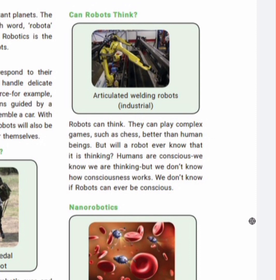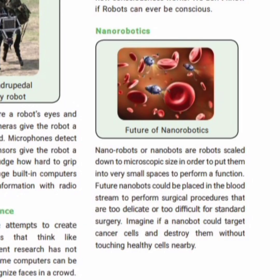What is artificial intelligence? Sometimes a robot has to think — for example, to play a complex game like chess. Humans are conscious and know they are thinking. Robots use AI to simulate decision-making. Nanorobots are robots scaled down to microscopic size in order to function in small spaces. Future nanorobots could be used for surgical procedures — traveling through the bloodstream to target and destroy cancer cells.